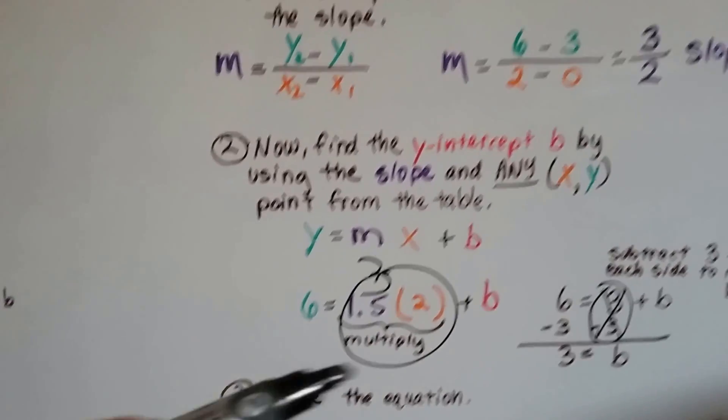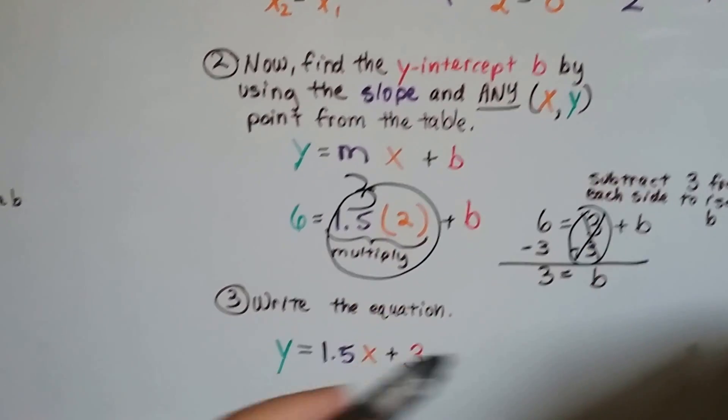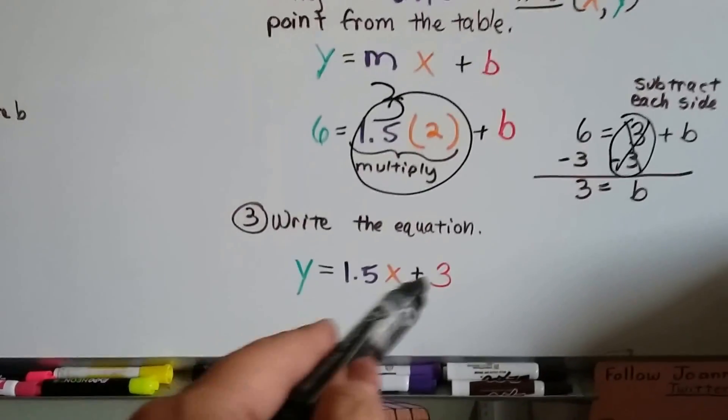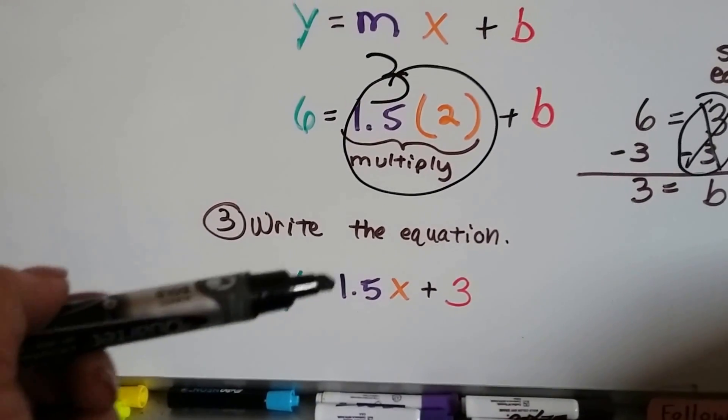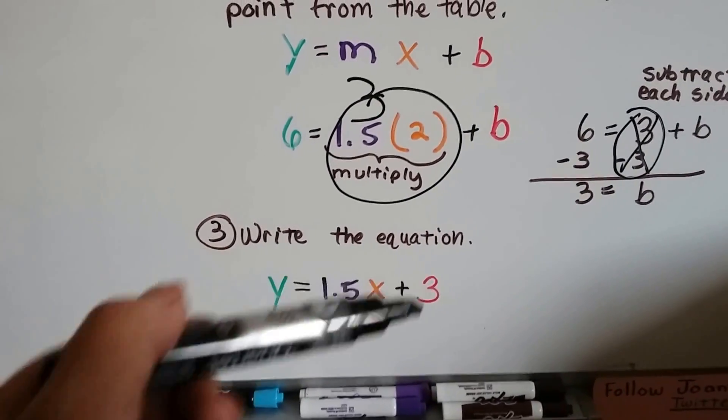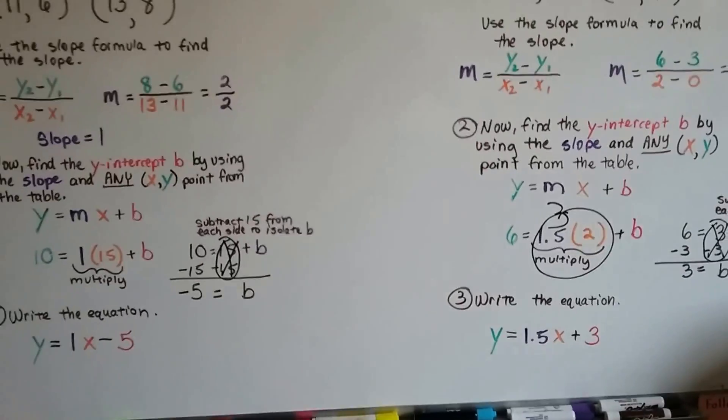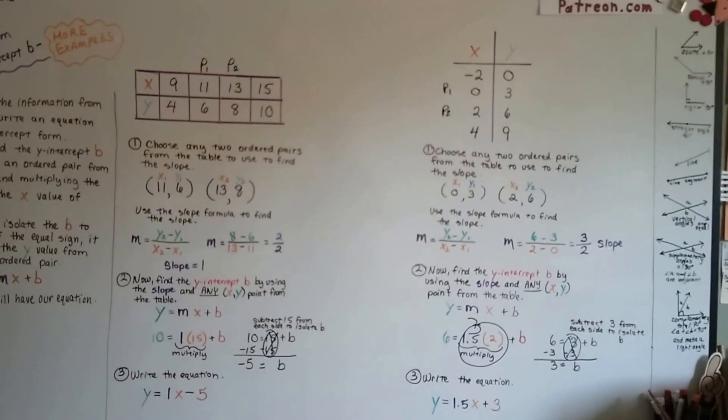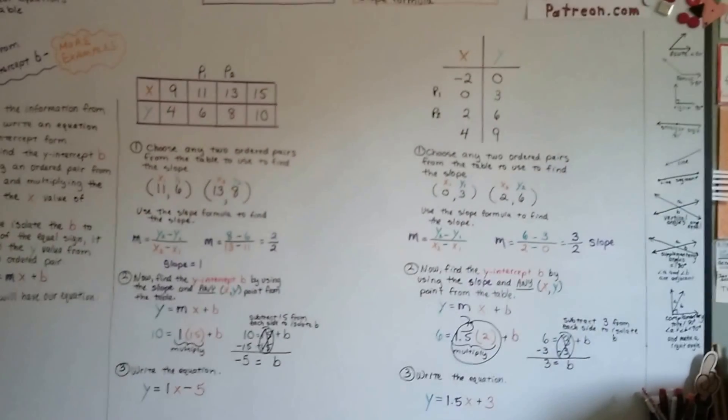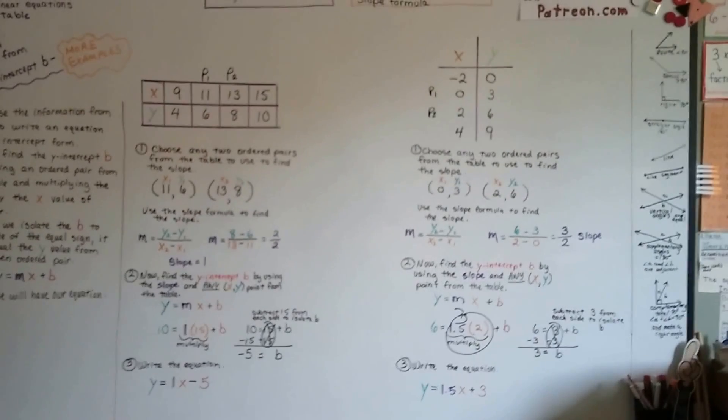Now what we have to do is take our 1.5 for our slope and our 3 for our y-intercept and plug them in with x and y variables, and we've got our equation. So we've got y equals 1.5x plus 3. Now you should be a pro after doing this. From the video 5.2b and this video, you should really know how to find the equation from a table now, right? And find the y-intercept.